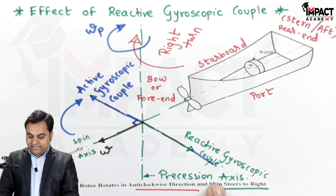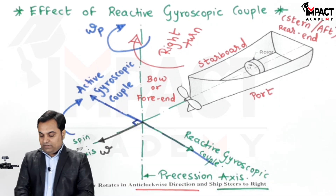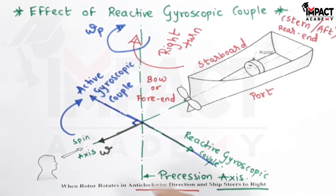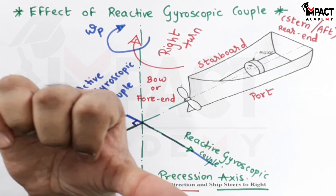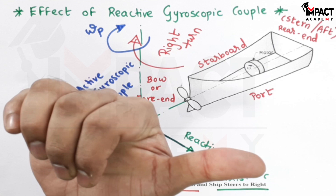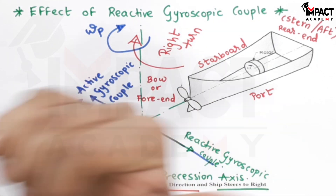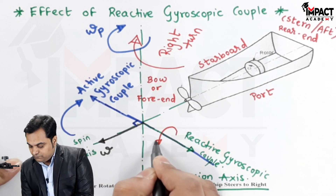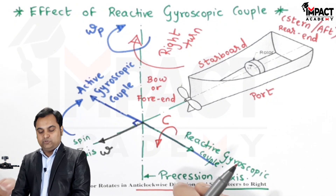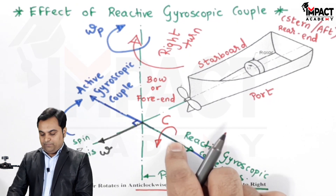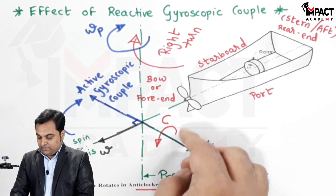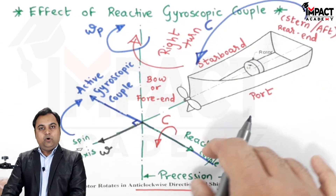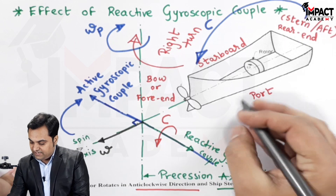Just opposite to the active gyroscopic couple there is a reactive gyroscopic couple. To find its direction, I match the thumb of the right hand with the vector of the reactive gyroscopic couple, and the curling fingers show the direction of the reactive gyroscopic couple, which I mark on the ship diagram. This is C, the reactive gyroscopic couple.